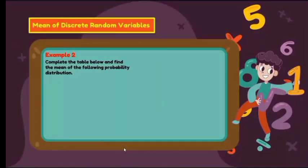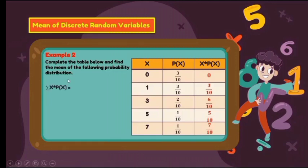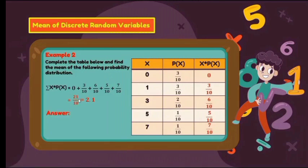Example 2: complete the table and find the mean of the following probability distribution. Since the table is already given, we proceed to Step 3. Multiply X by P(X): 0 times 3/10 is 0; 1 times 3/10 is 3/10; 3 times 2/10 is 6/10; 5 times 1/10 is 5/10; and 7 times 1/10 is 7/10. For Step 4, get the summation of X times P(X): 0 plus 3/10 plus 6/10 plus 5/10 plus 7/10 equals 21/10, or 2.1.